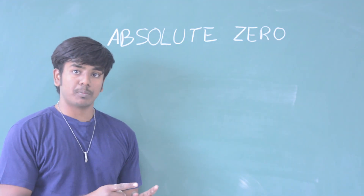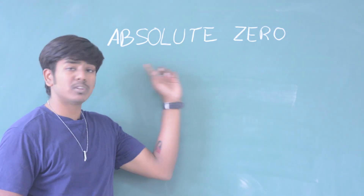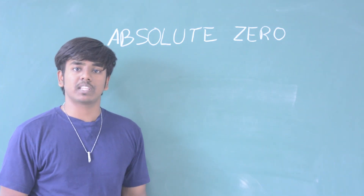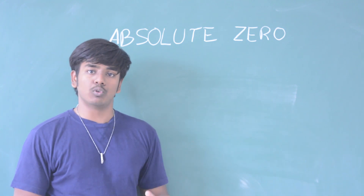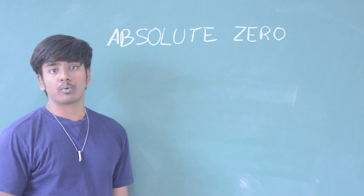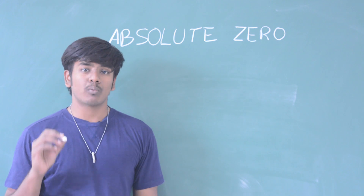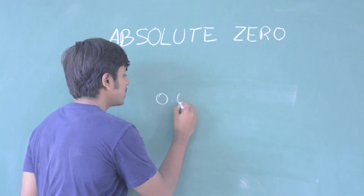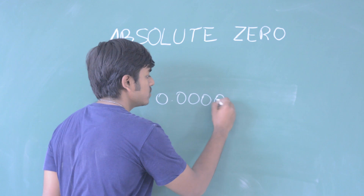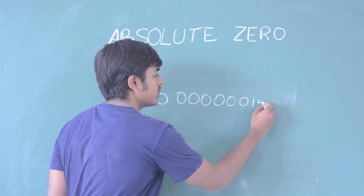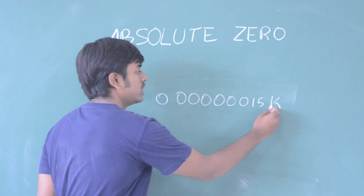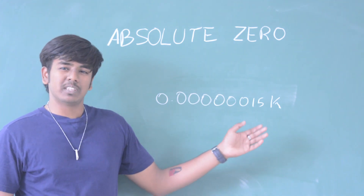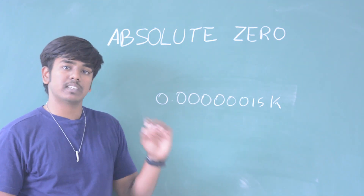Absolute Zero is the most important temperature in the laboratory. In our laboratory, we can cool substances, but we use the lowest possible recorded temperature of about 150 nanokelvin — that is approximately 0.00000015 Kelvin. In an experiment, we can record the lowest recorded temperature.